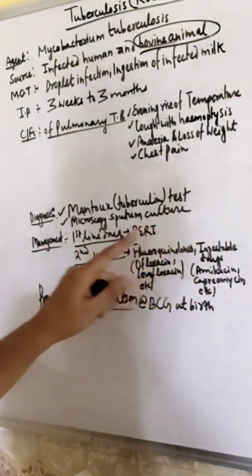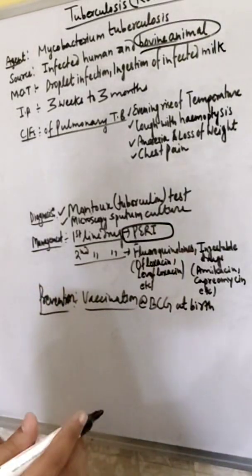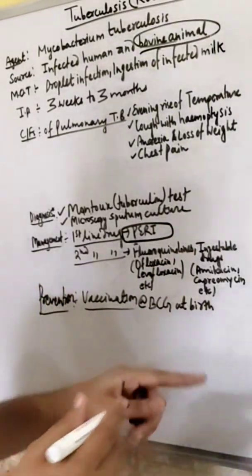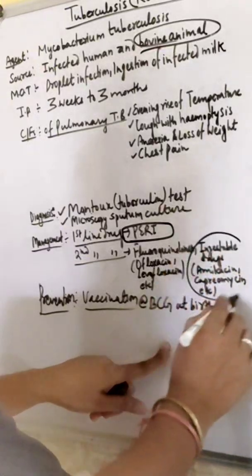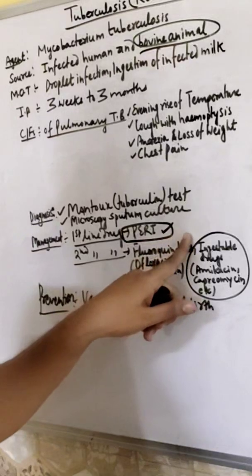Management is first line drug PERI. Before that, streptomycin was used. But now, it is included in injectable drugs. PERI: pyrazinamide, ethambutol, rifampicin, isoniazid.